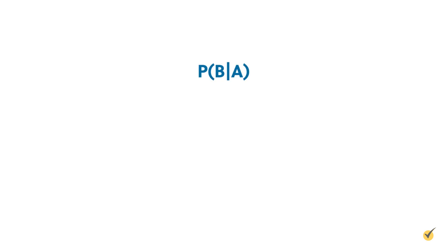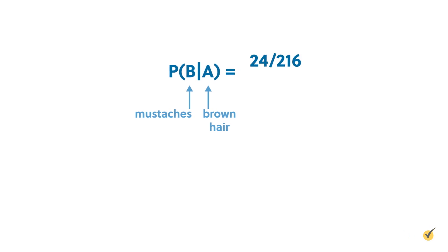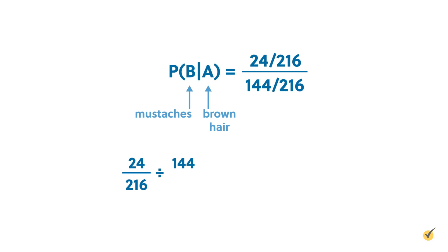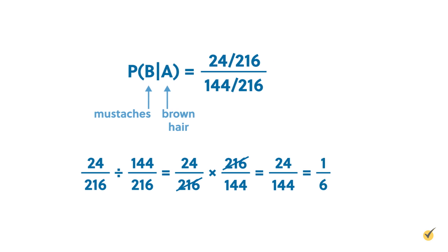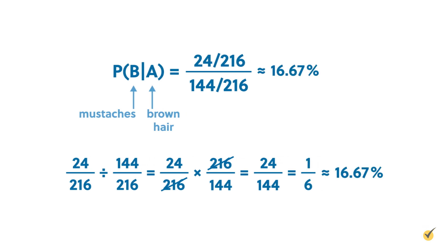Let's plug these numbers into our formula. The probability of event A (brown hair) and event B (mustache) is the 24 men with both, divided by the 216 total men. The probability of event A is 144 divided by 216. We divide 24 over 216 by 144 over 216 using fraction division. The 216s can be canceled out, so we are left with 24 over 144. This fraction can be reduced to 1 over 6, or approximately 16.67%.